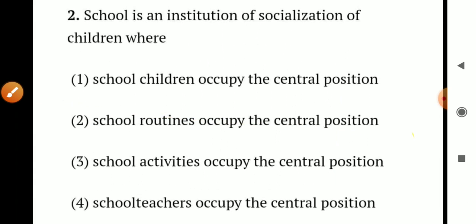Question number 2. School is an institution of socialization of children where: Option 1 - school children occupy the central position. Option 2 - school routines occupy the central position. Option 3 - school activities occupy the central position. Option 4 - school teachers occupy the central position. The school is an institution where children's socialization happens, so the correct answer is Option 1 - school children occupy the central position.